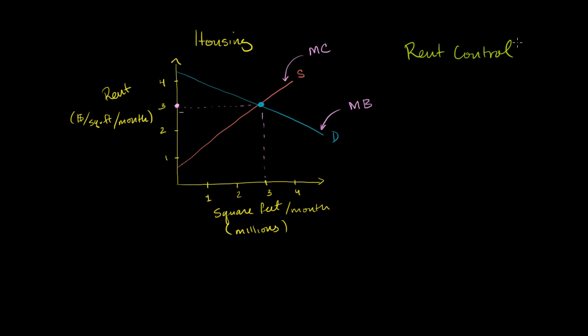Normally rent control means you can't increase rent beyond a certain amount, but for the sake of our model, let's say they put a price ceiling — a rent ceiling — on what rent can be charged, at $2 per square foot per month.